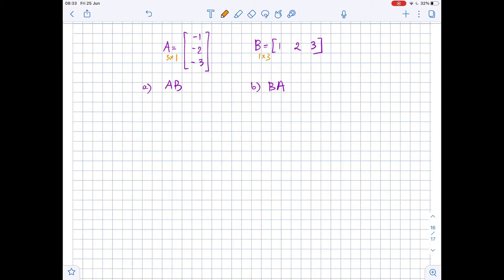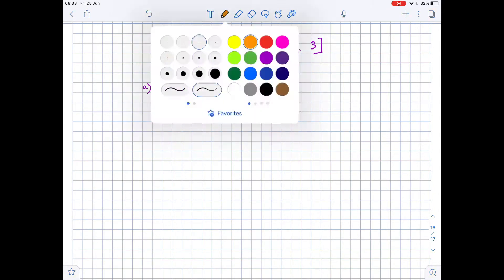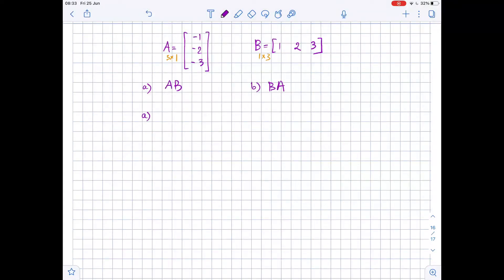So that means that both AB and BA are possible. So let's start by finding AB.